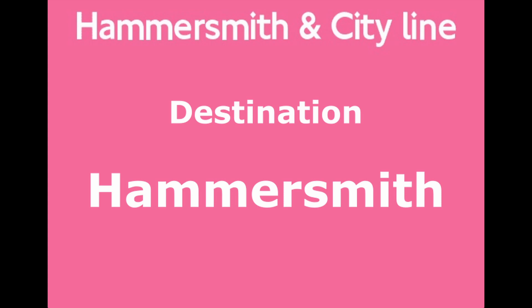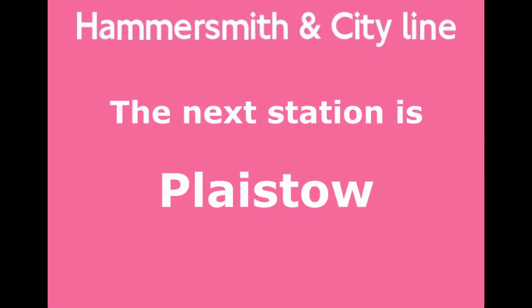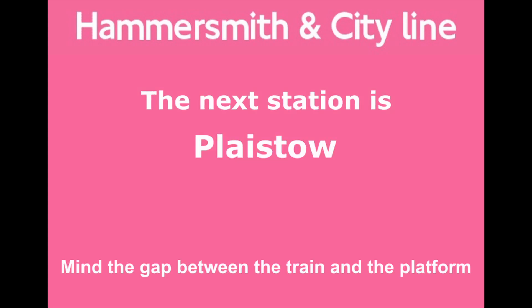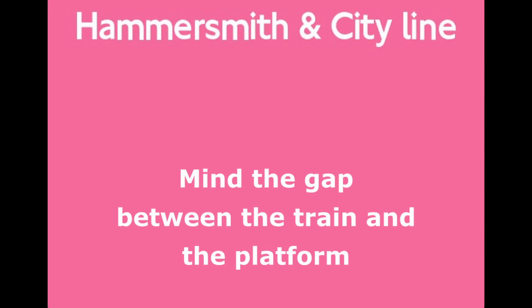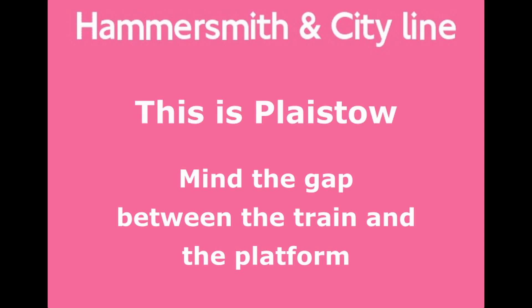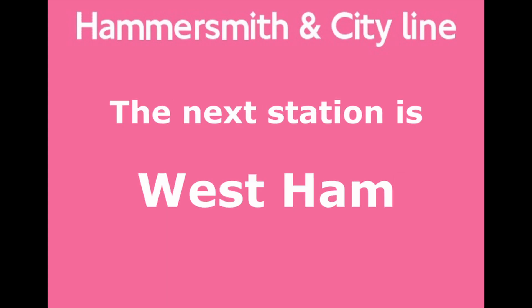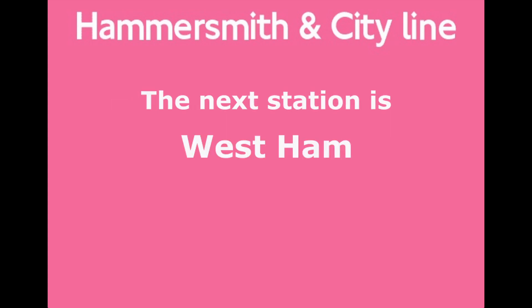This is Upton Park. This is a Hammersmith and City Line train to Hammersmith. The next station is Plaistow. Mind the gap between the train and the platform. This is Plaistow. This is a Hammersmith and City Line train to Hammersmith. The next station is West Ham. Change for the Jubilee Line, DLR and National Rail Services.